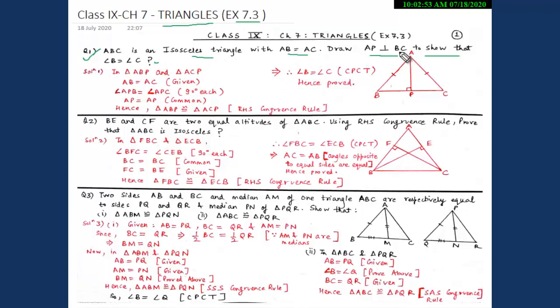In this question, the figure is not given. So first we will draw an isosceles triangle ABC in which side AB is equal to AC, and we also have to draw AP which is perpendicular to BC.